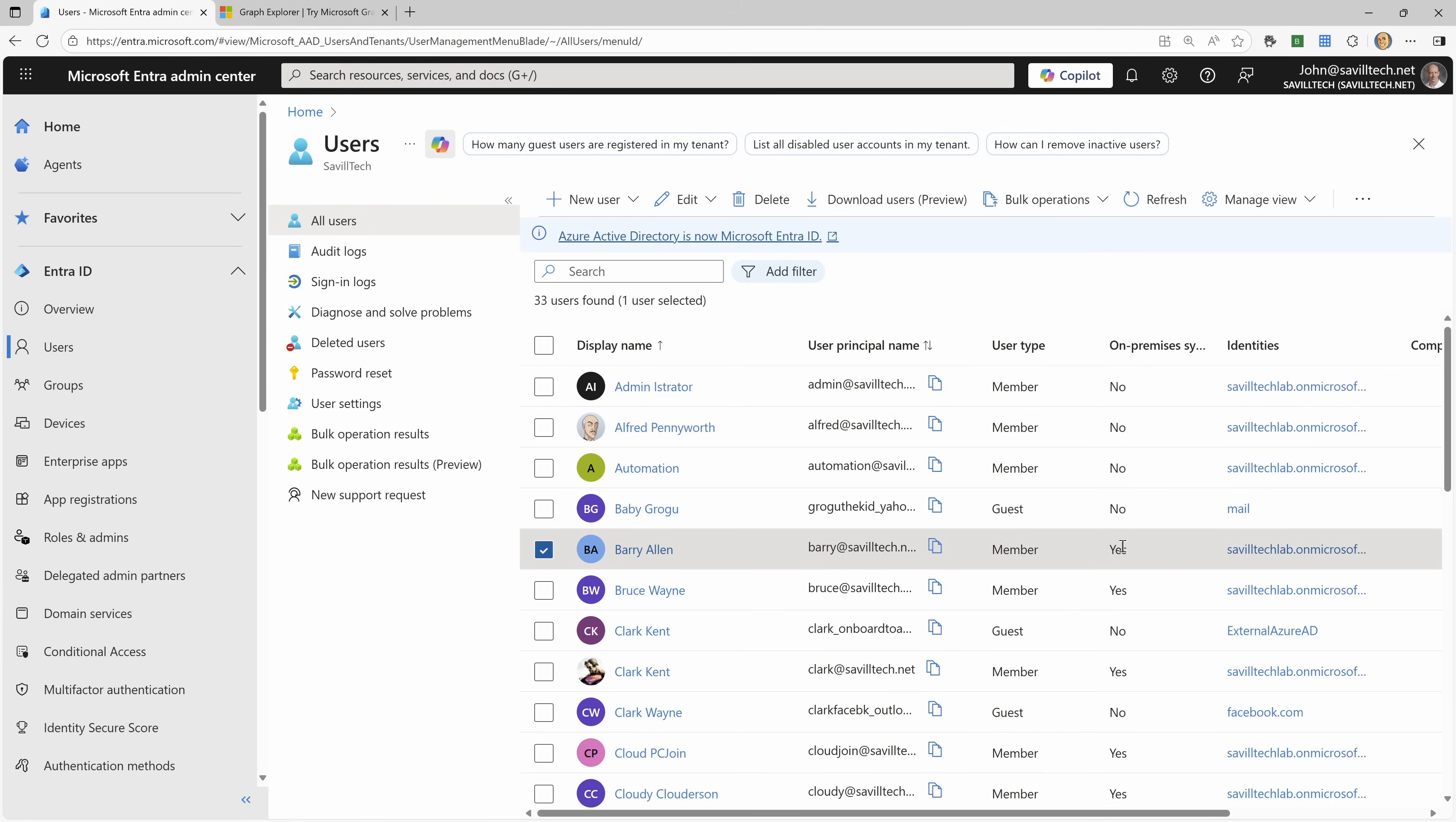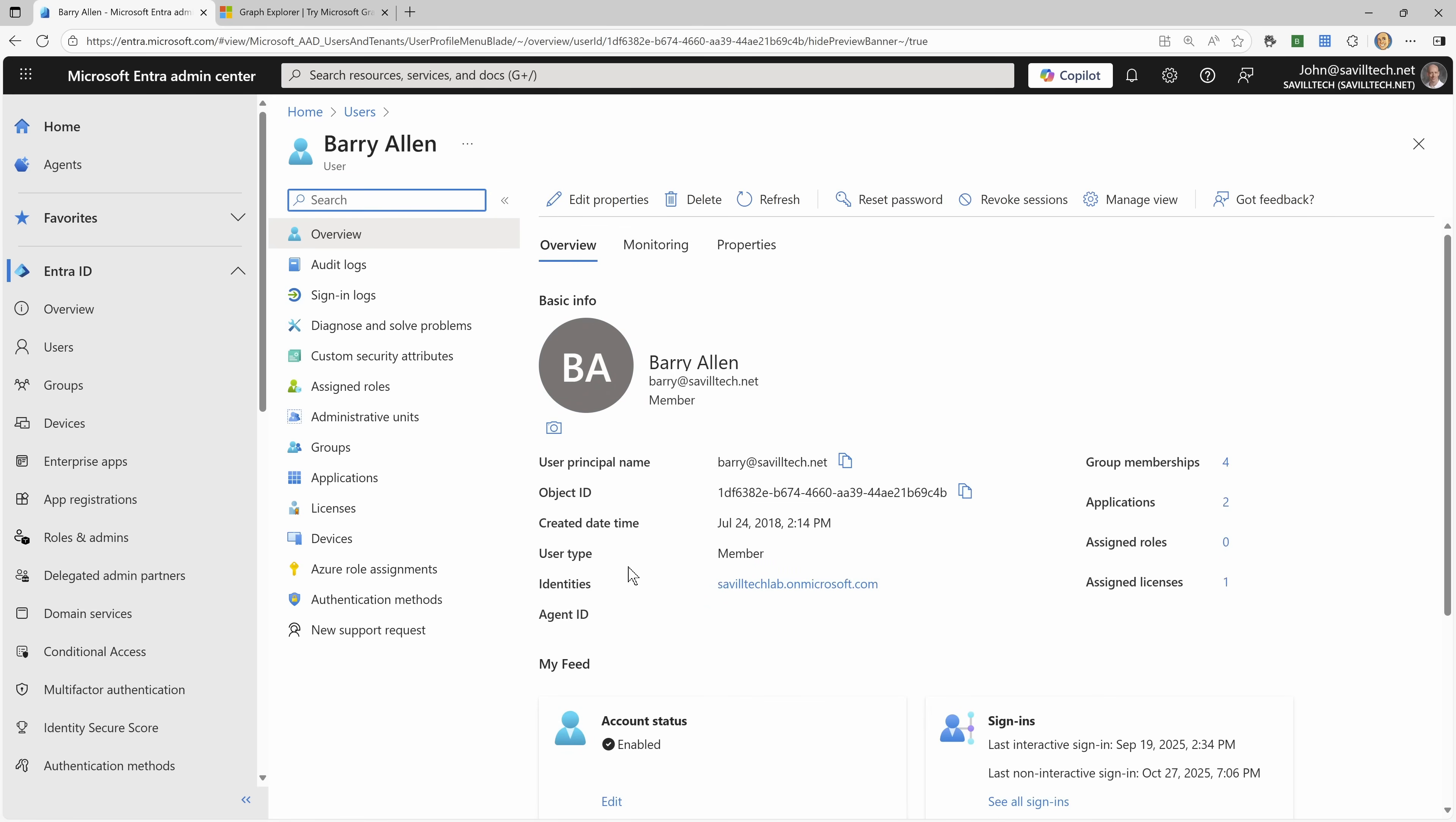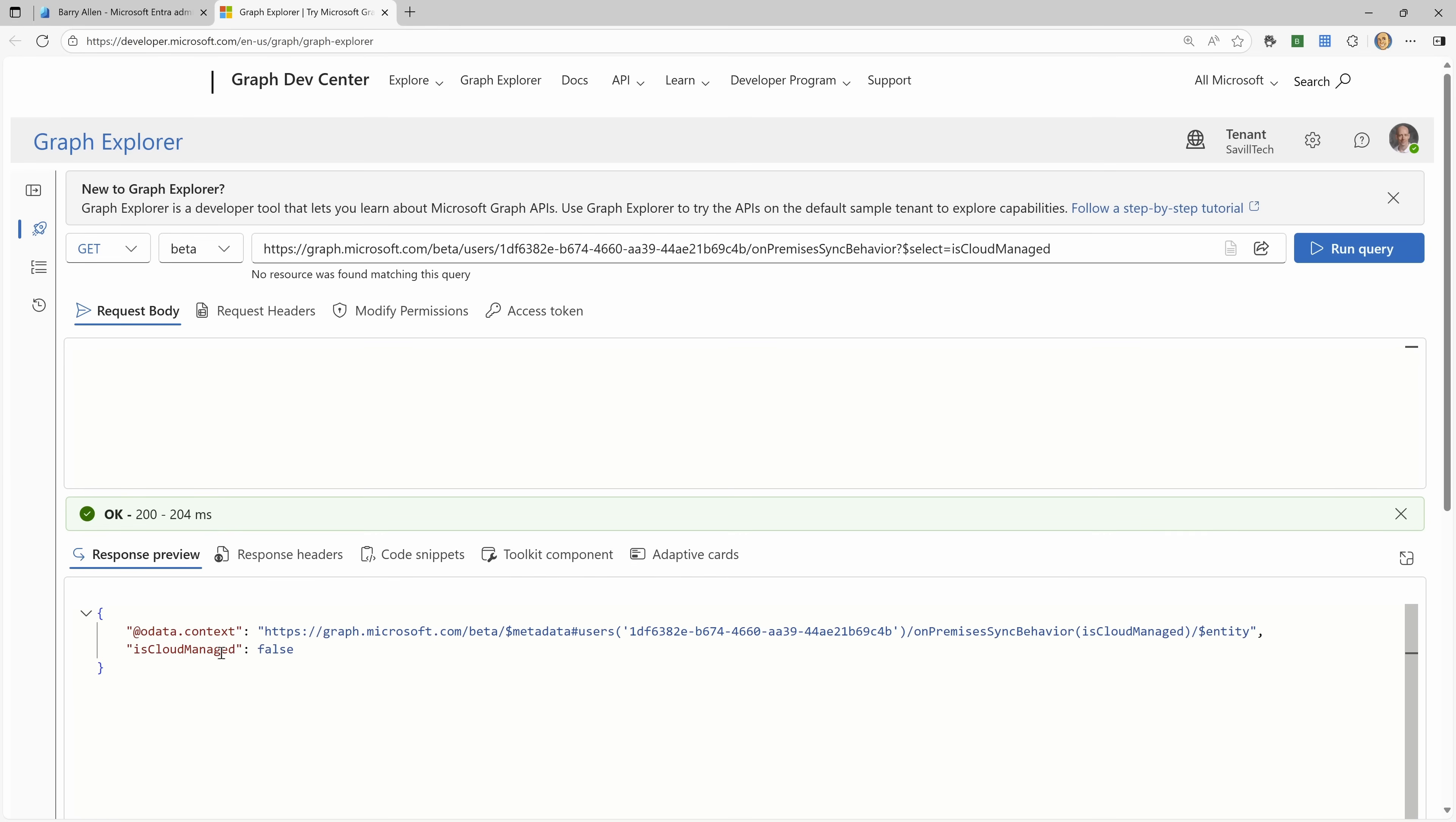We see this. If I jump over for a second to the portal, if I look at good old Barry Allen, it tells us firstly that yes, the on-premises synchronization is turned on for this user. And if I actually go and try and edit Barry, it's all grayed out. I can't change things. It's all grayed because the source of authority for this user is based in Active Directory. And we can even see that if I go to graph and I run this query, I'm asking it for, is it cloud managed? What we see the answer is false. Because it's not managed in the cloud. It's being managed from that Active Directory.